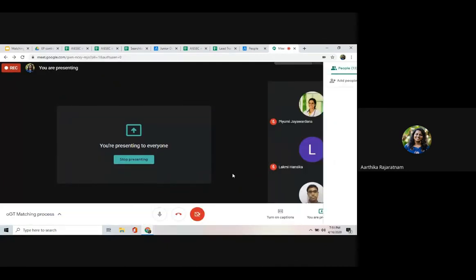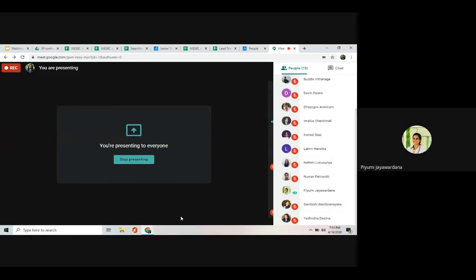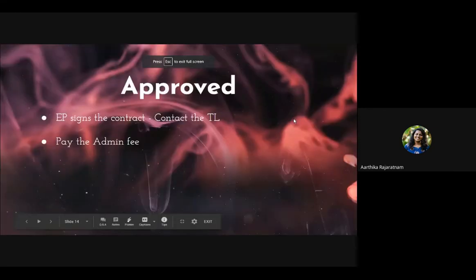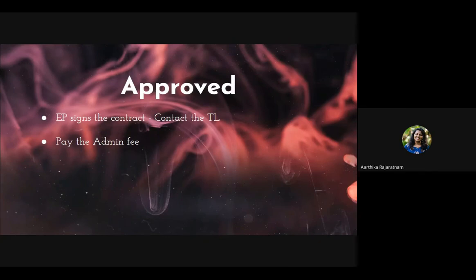The admin fee for a GT opportunity is 180 US dollars for opportunities less than six months, and 220 US dollars for more than six months. This should be communicated to the EP from the very first contact. When the EP pays the admin fee through their ISAC.org account and signs the contract, they get marked as approved.